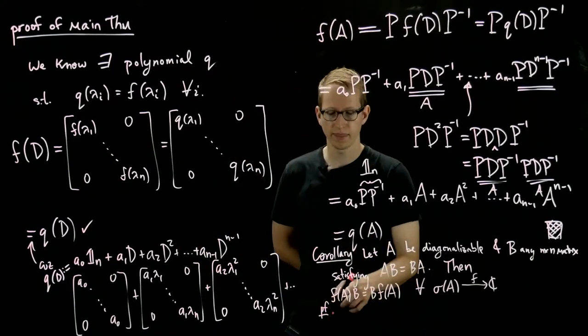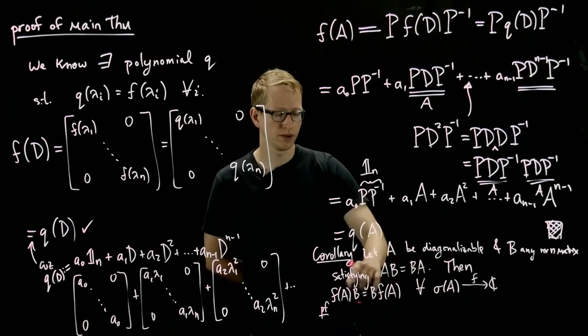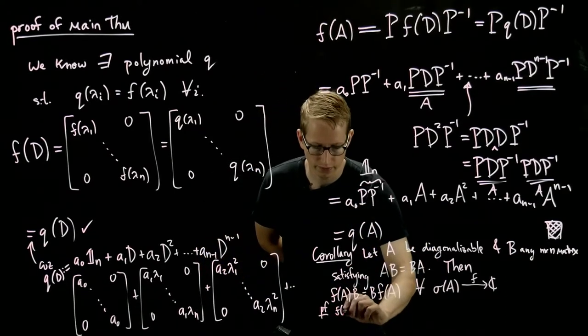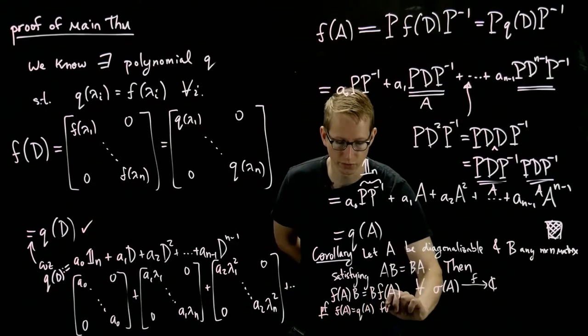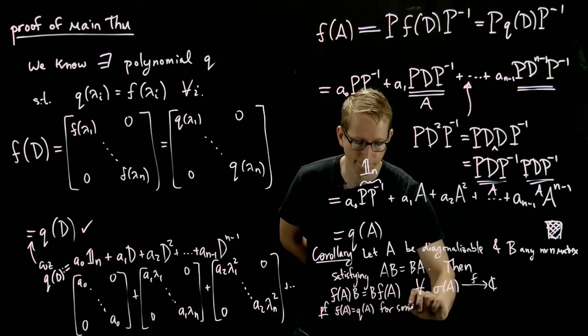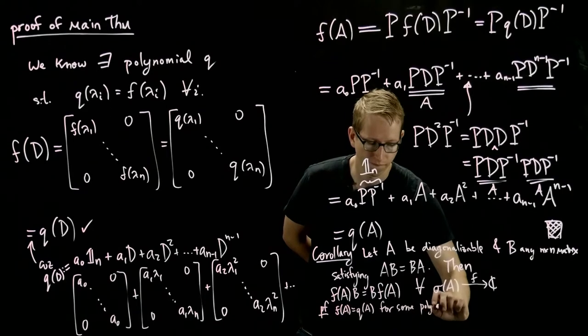Well, because A is diagonalizable, then f of A equals q of A for some polynomial q.